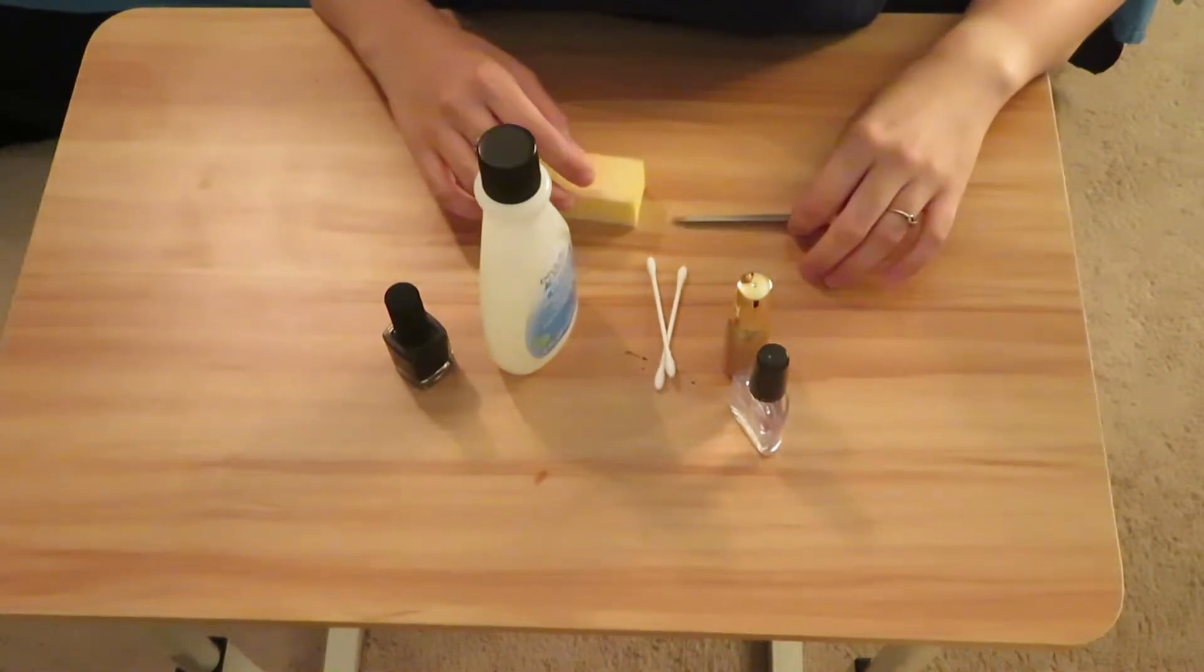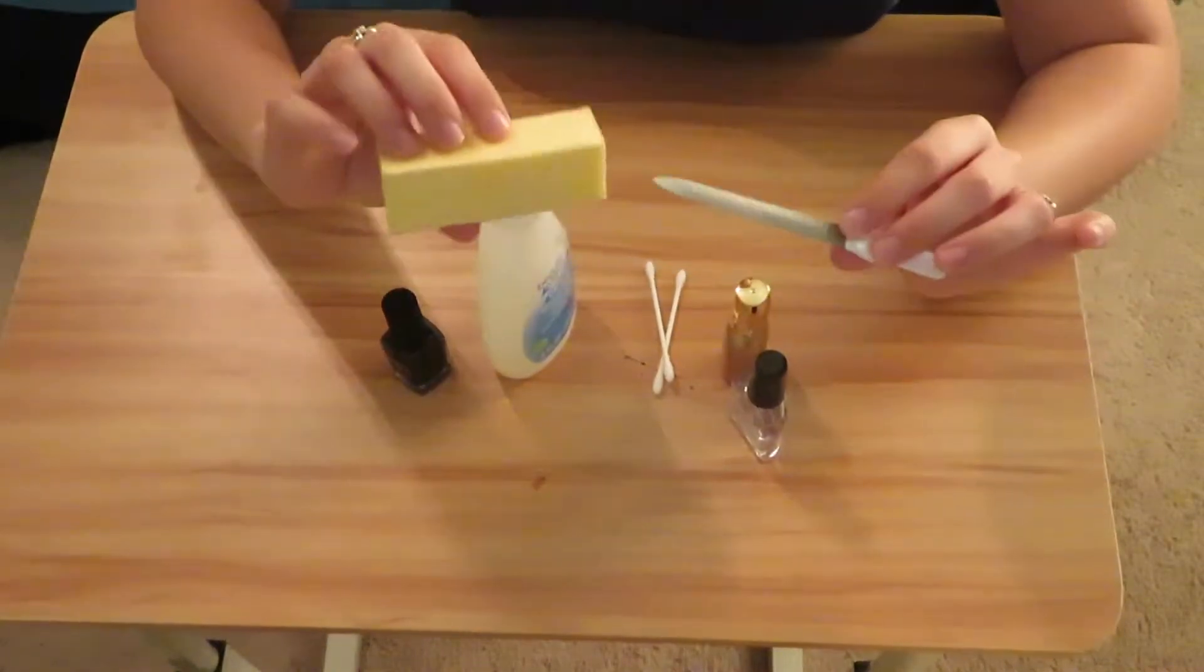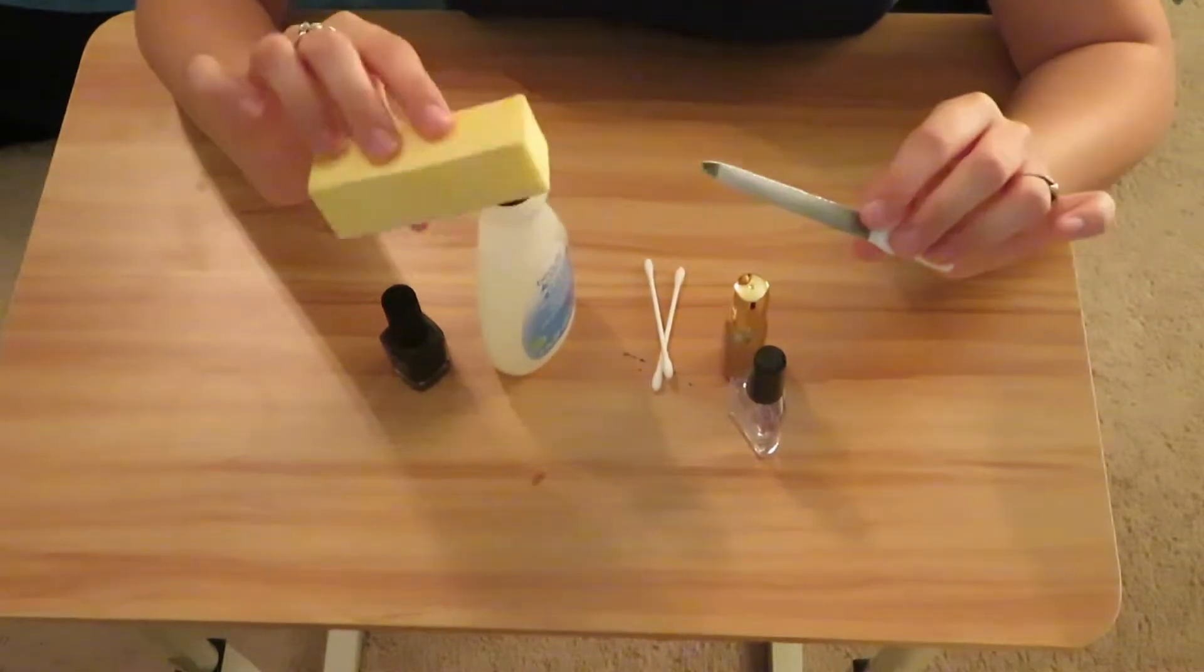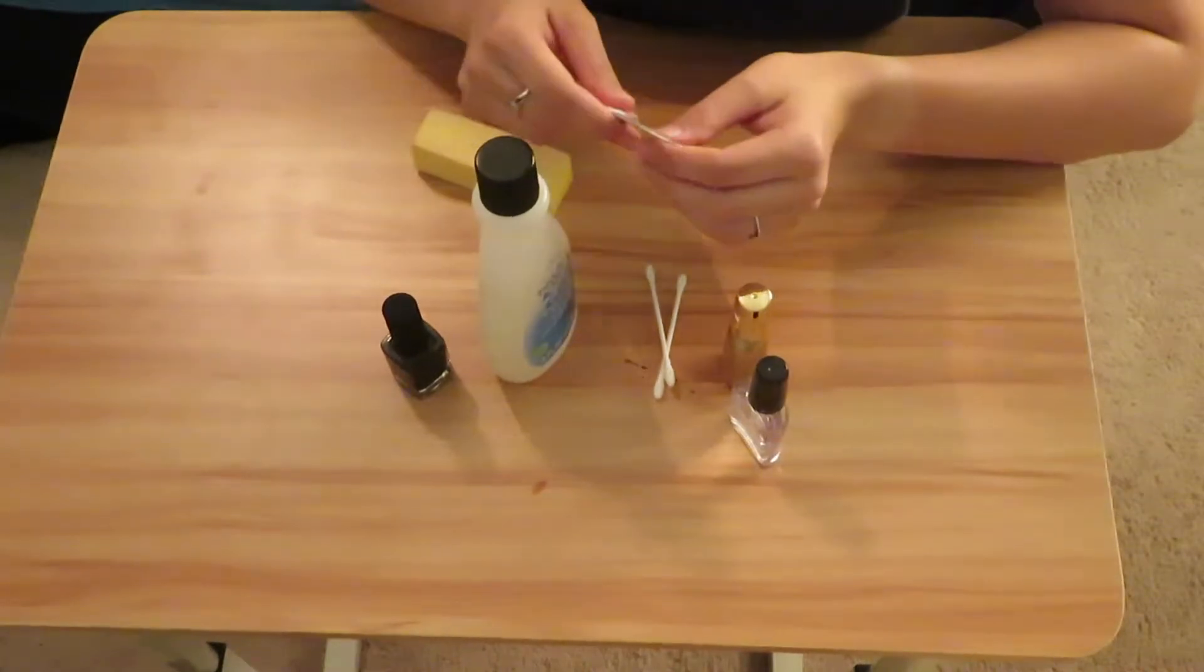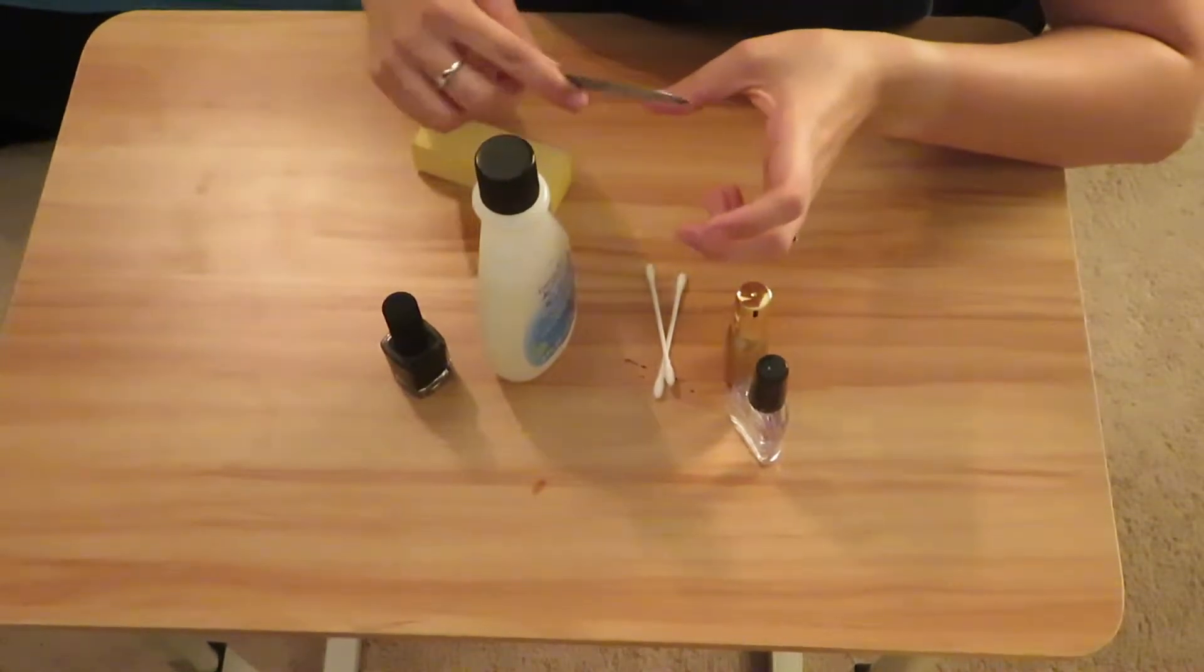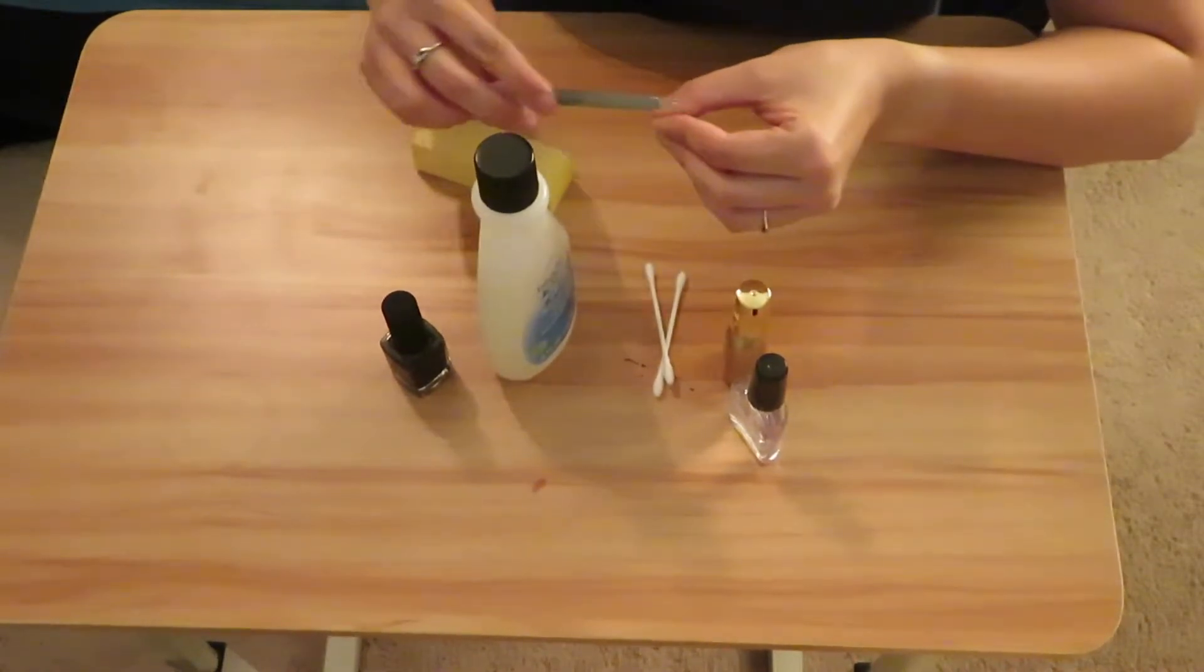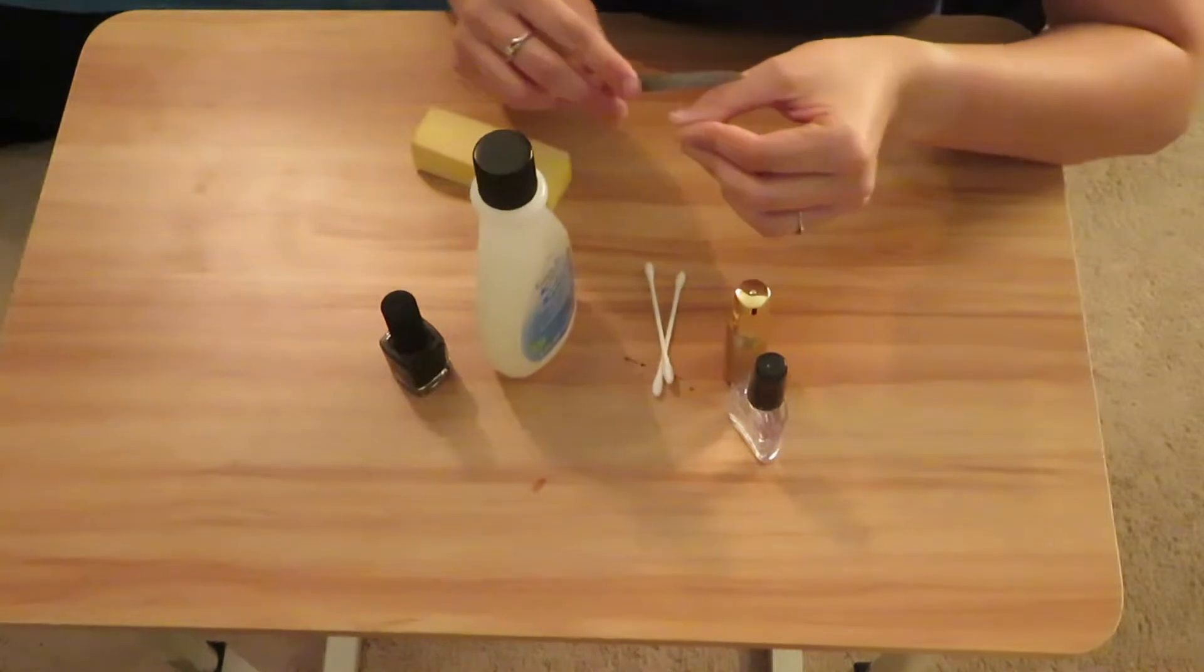So the first thing I'm going to be showing you is the filing that I do. I use the metal file to kind of even things out a bit and then the yellow file is like a buffer. I'm not exactly sure if I even use it correctly, but I just like to buff over the nails after I've done the metal filing.